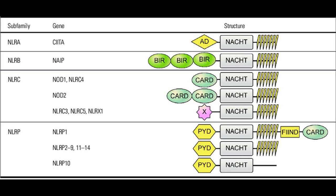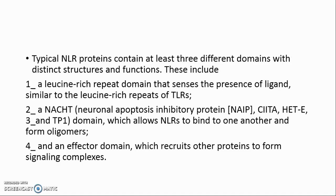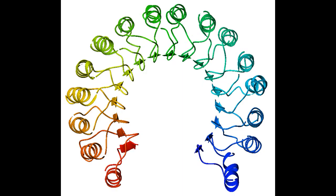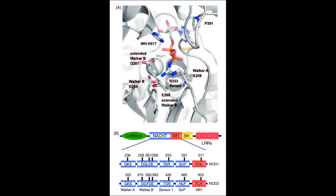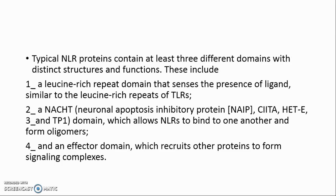Typical NLR proteins contain at least three different domains with distinct structures and functions. These include: (1) a leucine-rich repeat domain that senses the presence of ligand, similar to the leucine-rich repeats of TLRs; (2) a NACHT domain (Neuronal Apoptosis Inhibitory Protein, NAIP, CIITA, HET-E, TP1), which allows NLRs to bind to one another and form oligomers; and (3) an effector domain, which recruits other proteins to form signaling complexes.